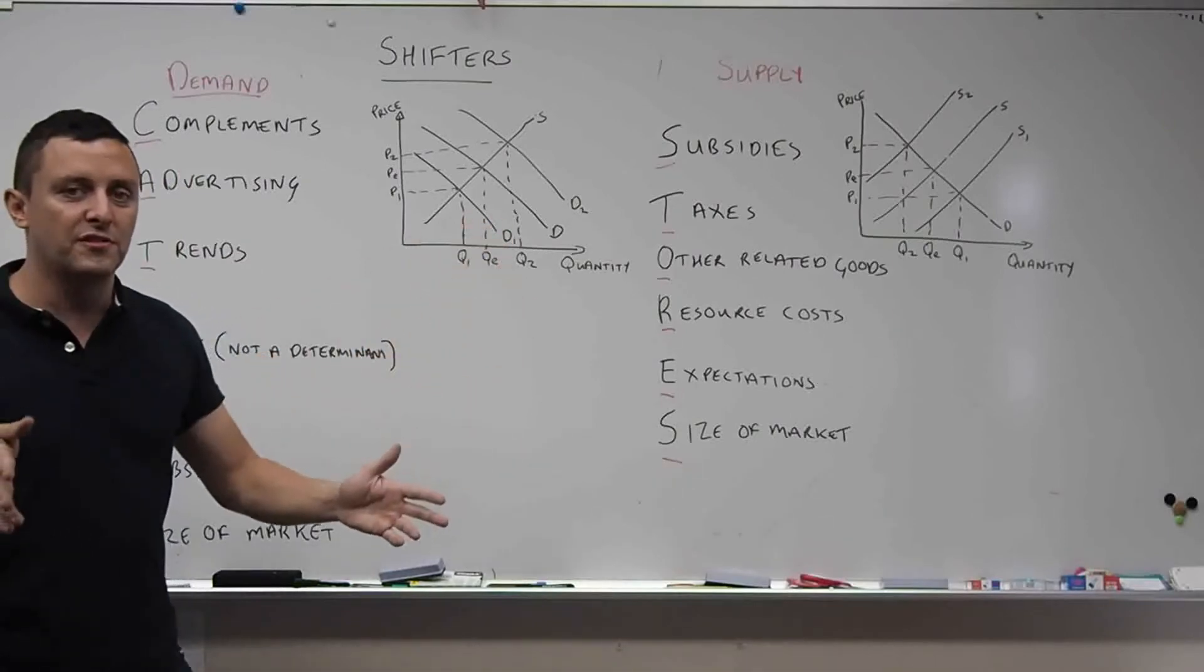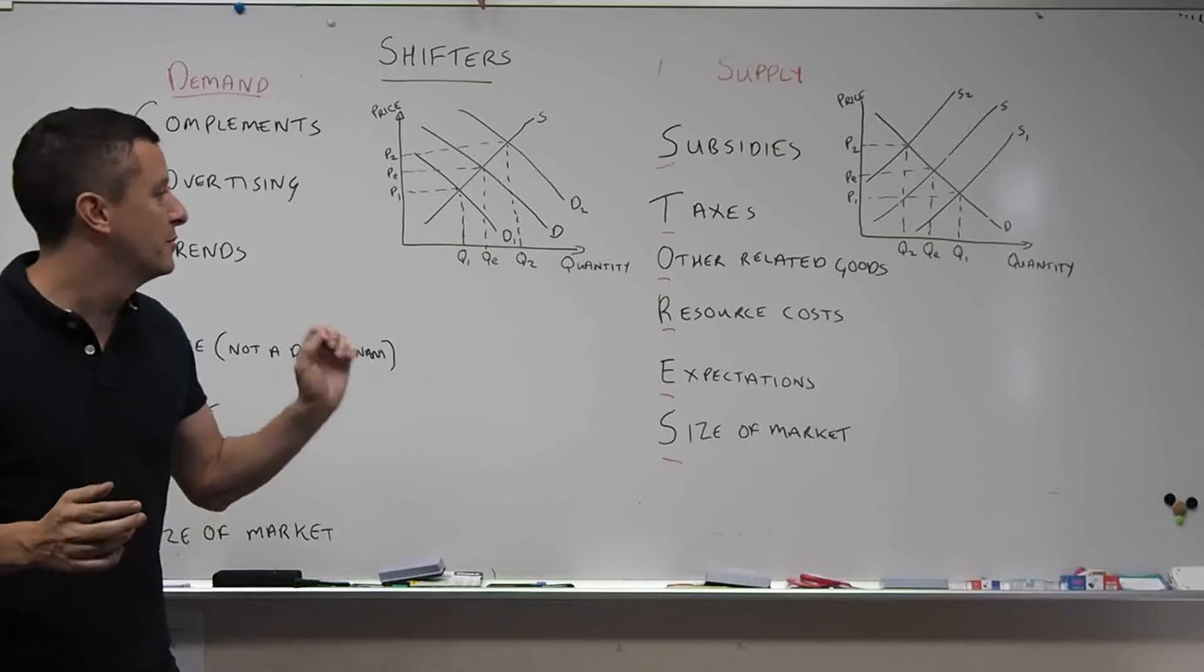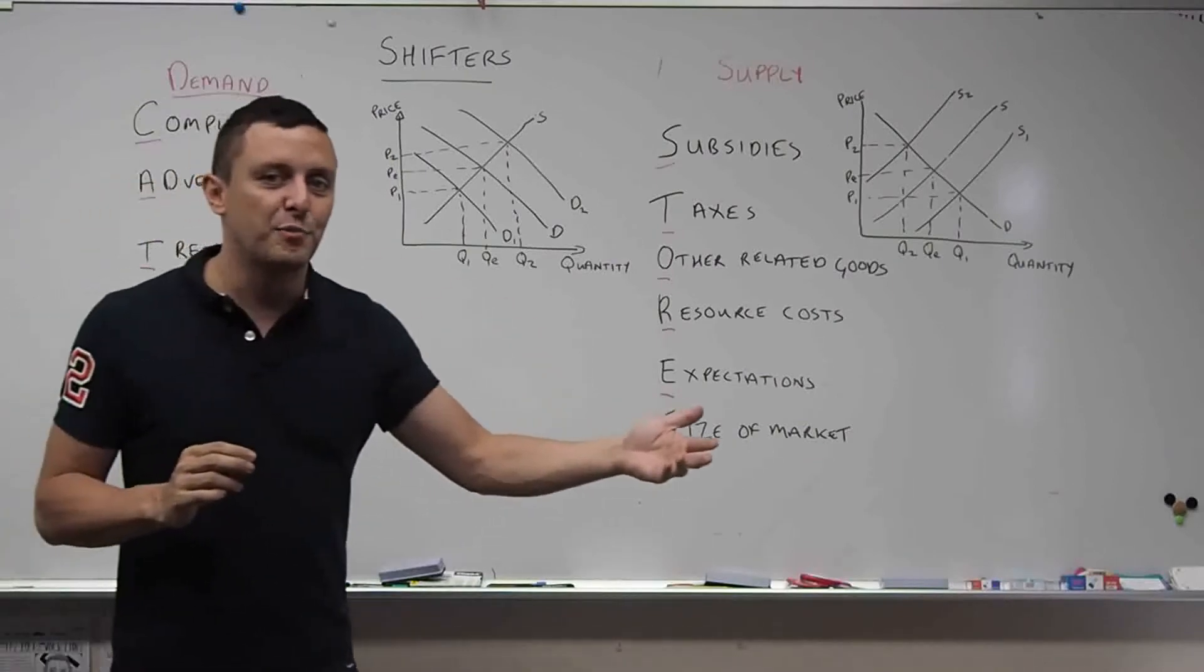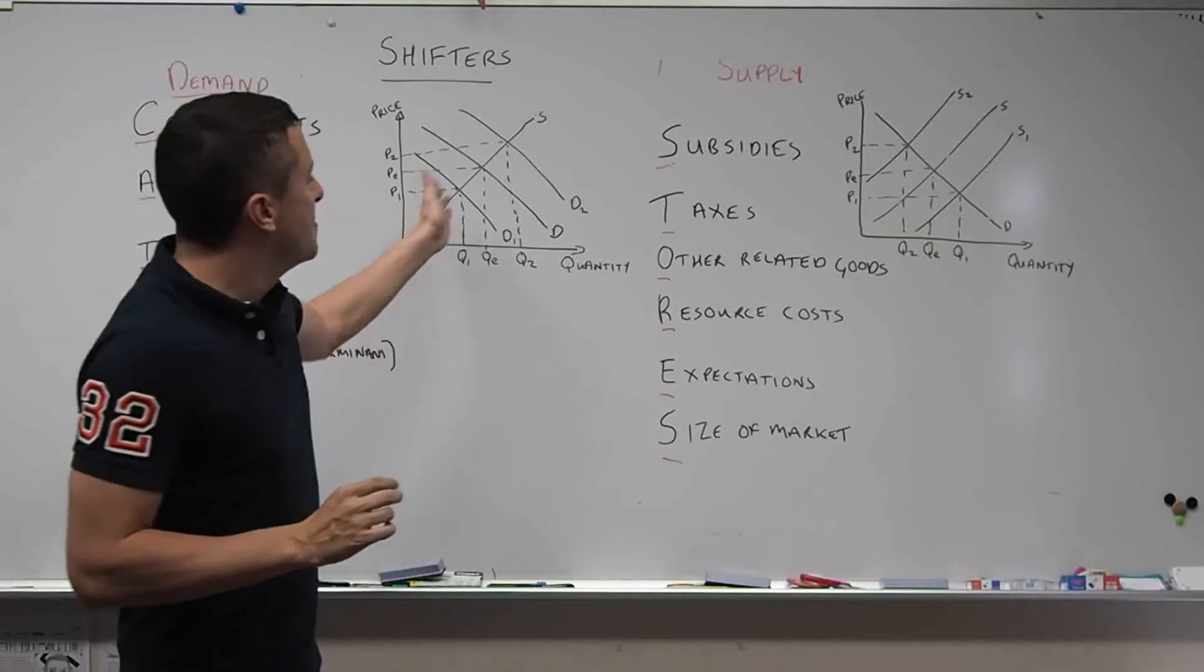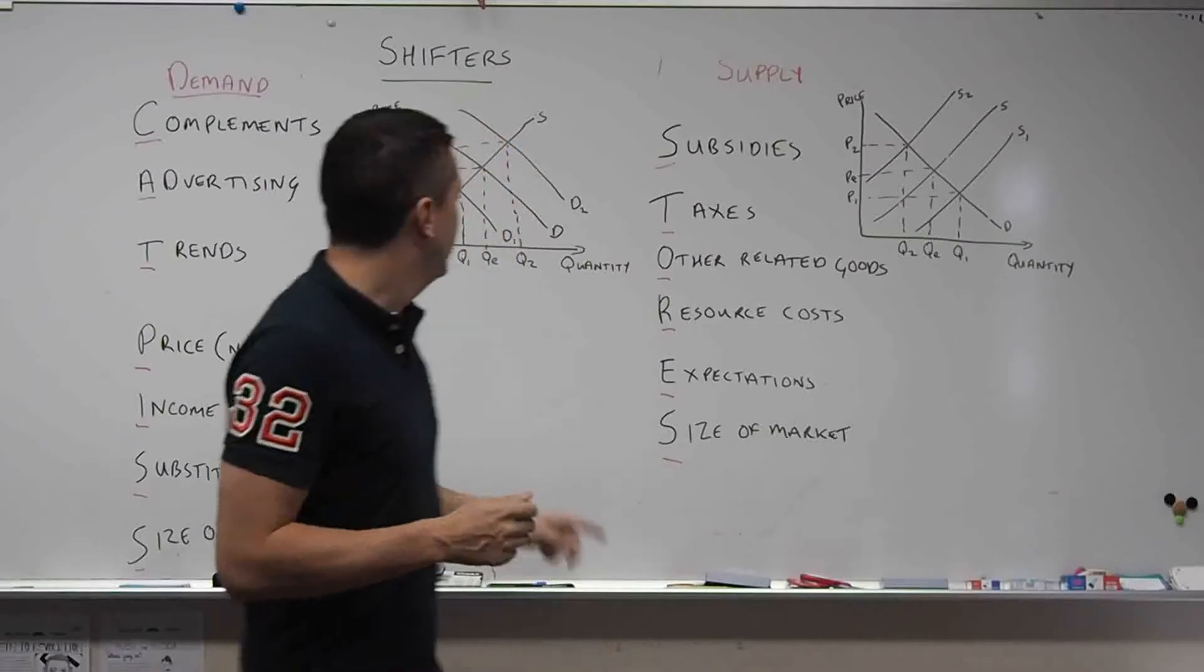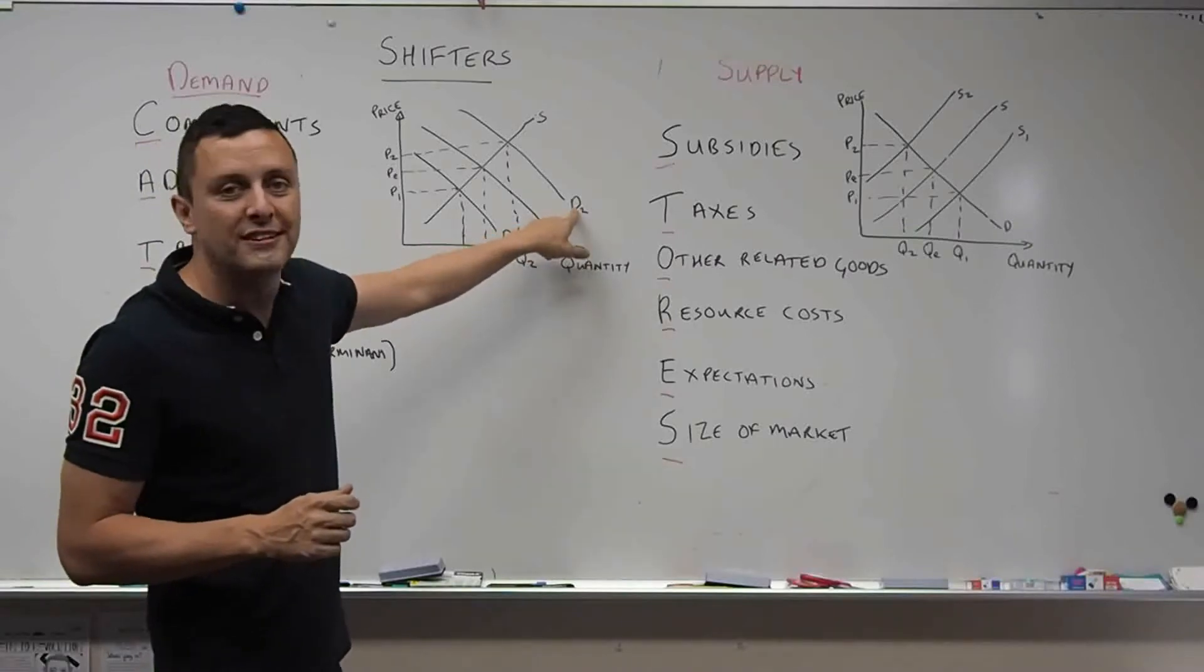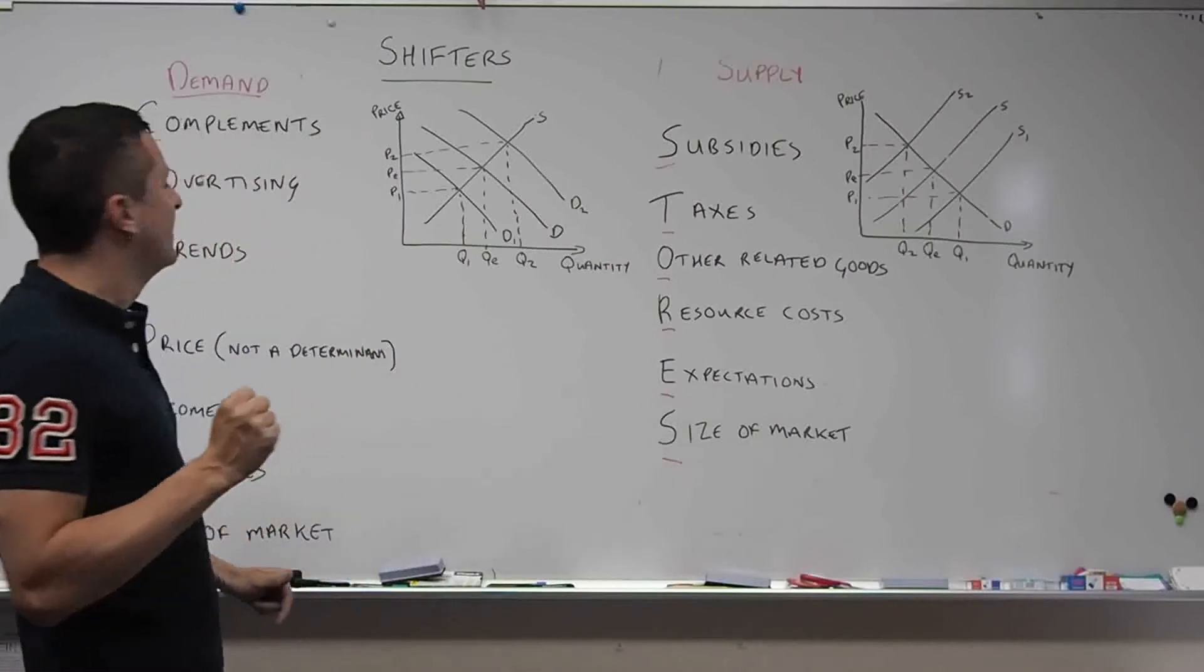If you see a whole bunch of hot dog buns that are cut in price by 50%, 20%, whatever, you may pick them up. And when you pick them up, you've got to buy something to put in those hot dog buns. So that will increase the demand for hot dog sausages. You can see that in the diagram.